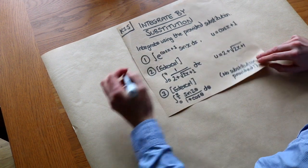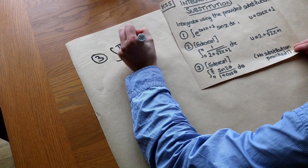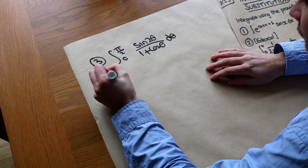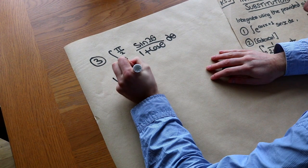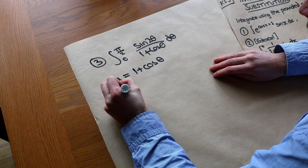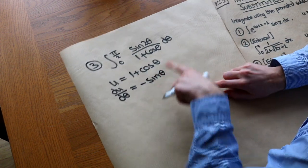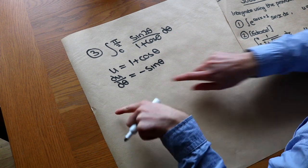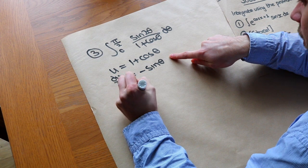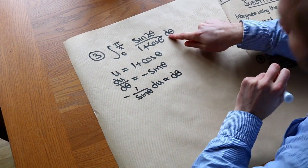We integrate sin(2θ) over (1 plus cos θ) from 0 to π/2, making the substitution u equals the denominator, 1 plus cos θ. Differentiating: du over dθ equals minus sin θ. Making dθ the subject: we multiply by dθ and divide by minus sin θ, giving dθ equals minus 1 over sin θ times du. We also need to change the bounds since they are currently in terms of θ.